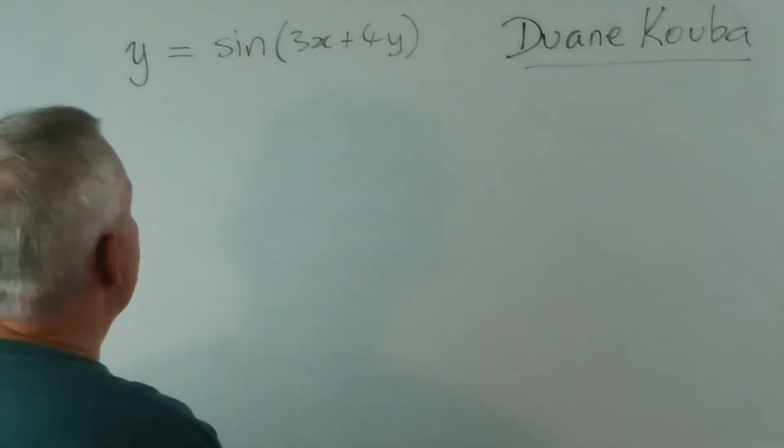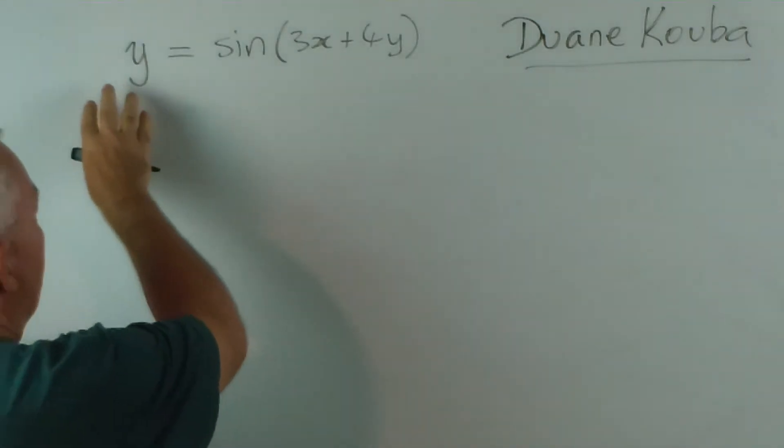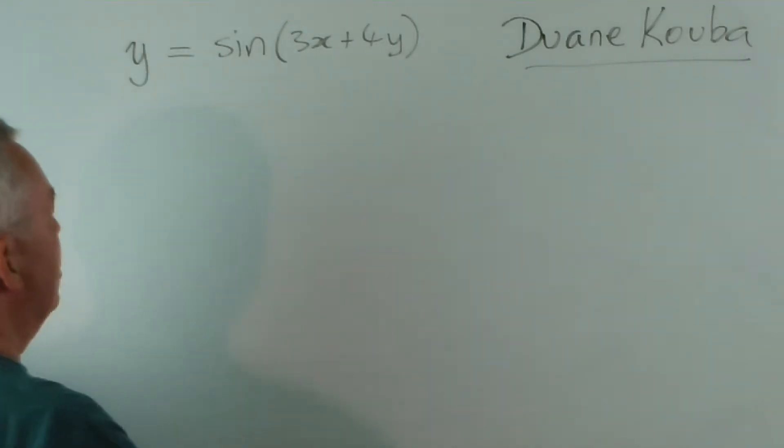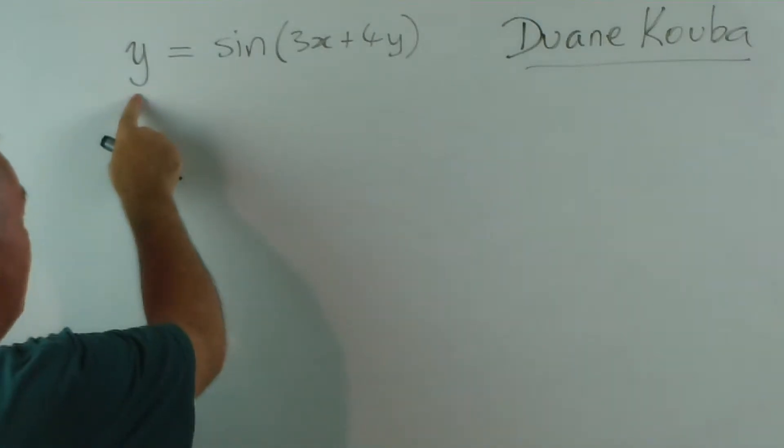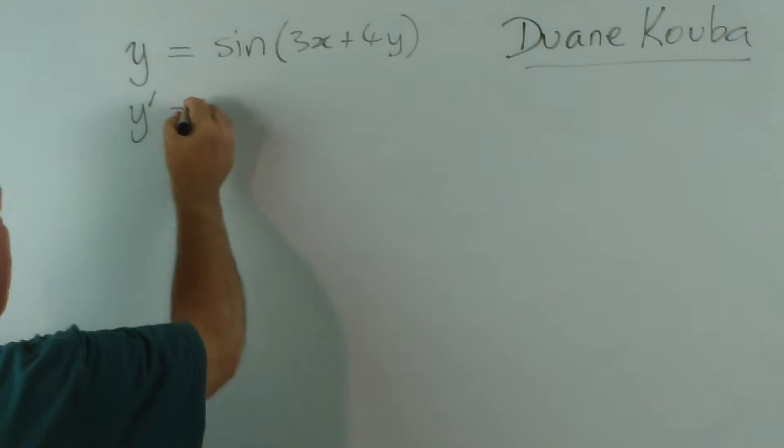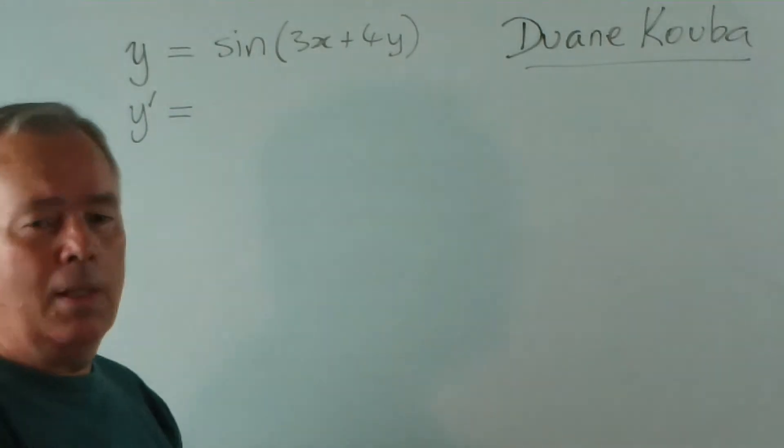Without further ado, let's get started. We're going to find the derivative of both sides with respect to x. The derivative of y with respect to x is dy dx, or y dash.